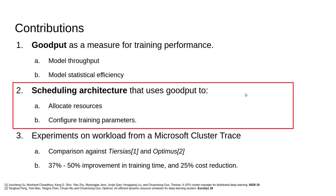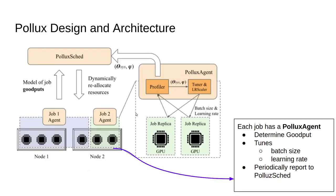Having modeled goodput as a combination of throughput and statistical efficiency, we now look at the scheduling architecture. The question is how to use goodput to both allocate resources and configure training parameters. This is the overall architecture of Pollux — the systems part. There are two nodes, each hosting multiple GPUs.